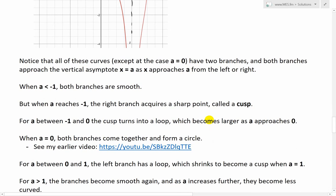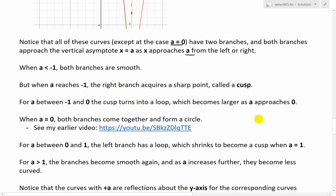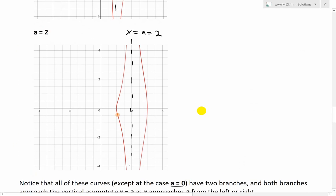So notice that all of these curves, except at the case of a equals 0, have two branches. And both branches approach the vertical asymptote x equals a, as x approaches a from the left or right. But when a is less than negative 1, both branches are smooth.